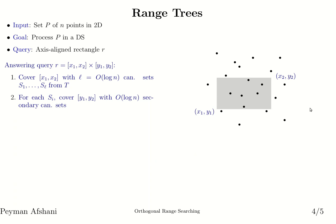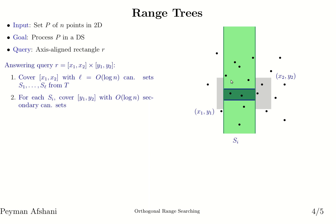How do we answer queries? Assume we have a query rectangle given by interval [x1, x2] cross interval [y1, y2]. We know that given the balanced binary search tree T, we can cover the interval [x1, x2] using log n canonical sets. Pick one canonical set Si. We know that Si is stored in a balanced binary search tree T(Si) ordered by the y coordinates. So we can cover the interval [y1, y2] with log n secondary canonical sets, something like this.